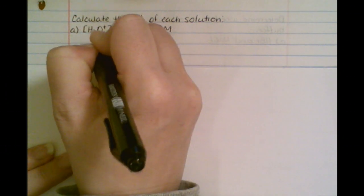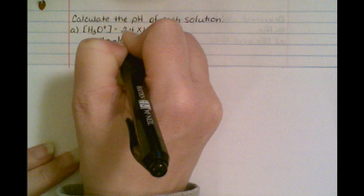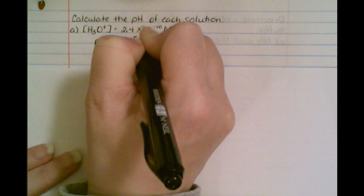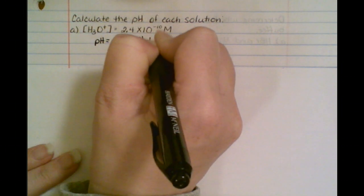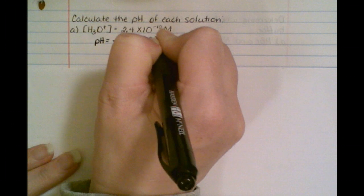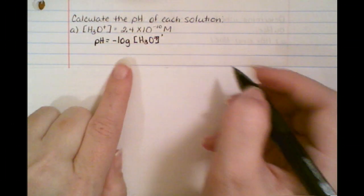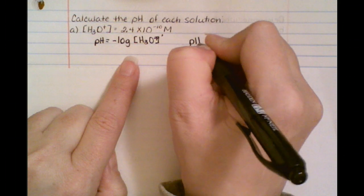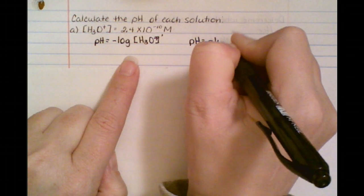So we know that the pH formula says that the pH equals the negative log of the hydronium concentration. What does that mean? Well, that means that whenever I see that hydronium, I'm going to replace it with whatever it told me in the problem.